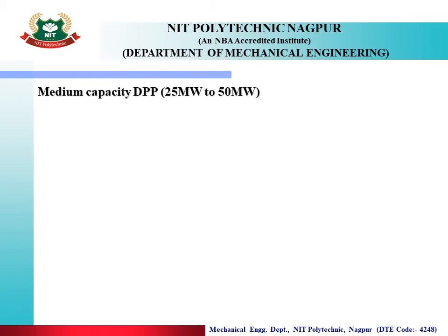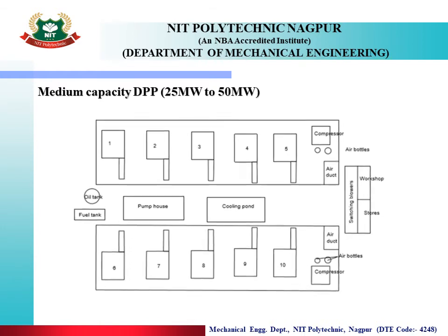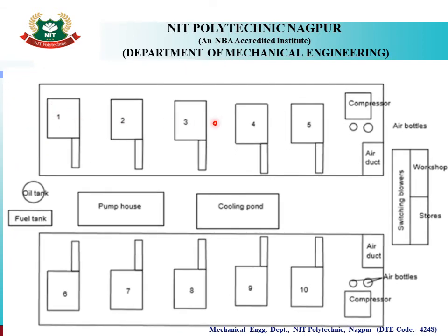Next is the medium capacity diesel power plant. The medium capacity power plant has a capacity of 25 to 50 megawatts. In this arrangement, you can see engines numbered 1 through 10, but with fewer engines compared to the high capacity plant. Similar to the high capacity plant, each engine is attached to air filters and blowers.